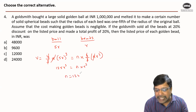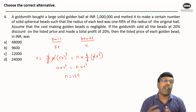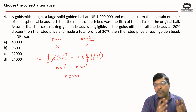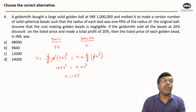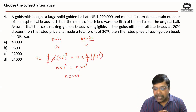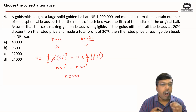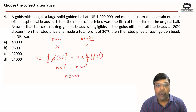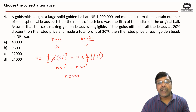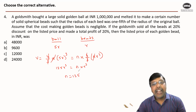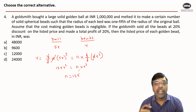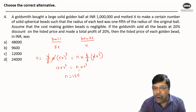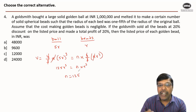Therefore, the number of small spherical shaped beads is 125. With this, the concept of mensuration is done. From here on we need to apply the concept of profit/loss. The goldsmith sold all the beads at a 20% discount and still made a profit of 20%. We need to calculate the listed price, which is the other name for market price.